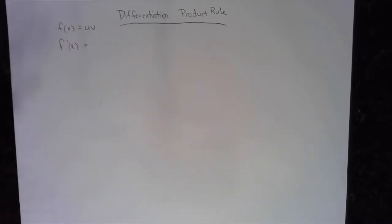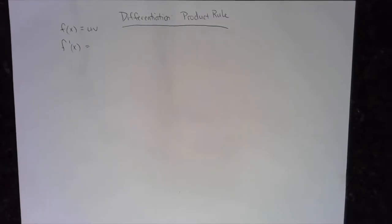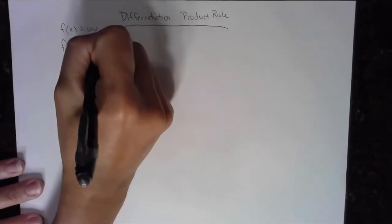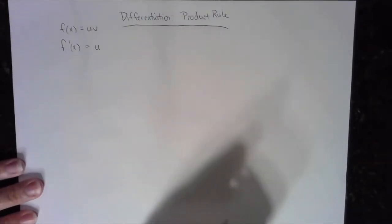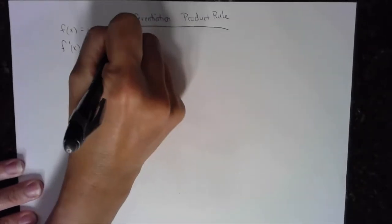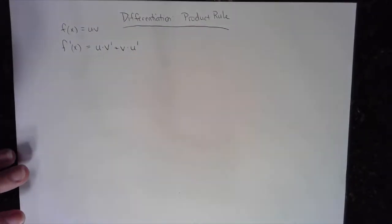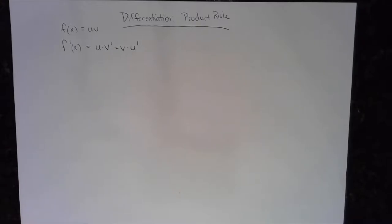The basic rule looks like this: if I want to take the first derivative, represented by f prime of x, what we do is take the first expression, multiply that by the derivative of the second, plus the second expression multiplied by the derivative of the first. This is a general formula, and what makes it easier is to say it out loud.